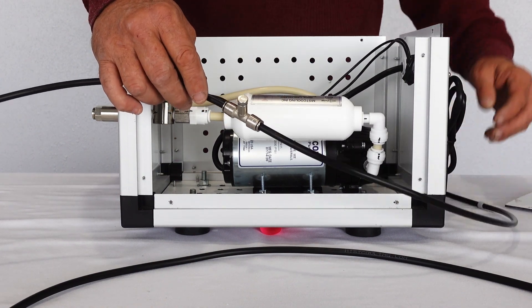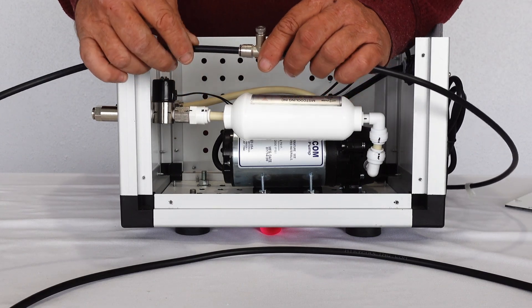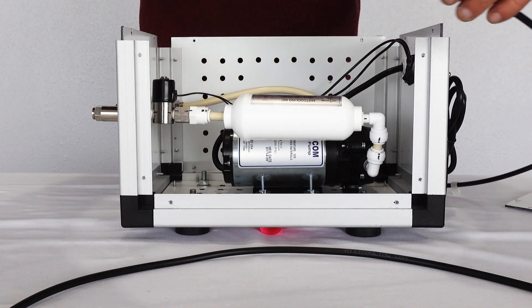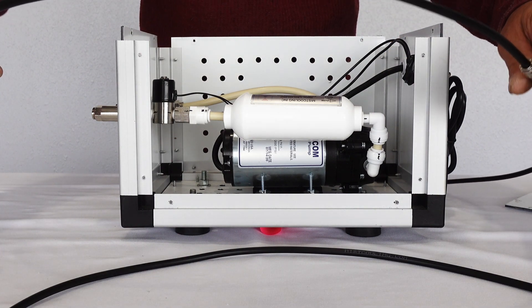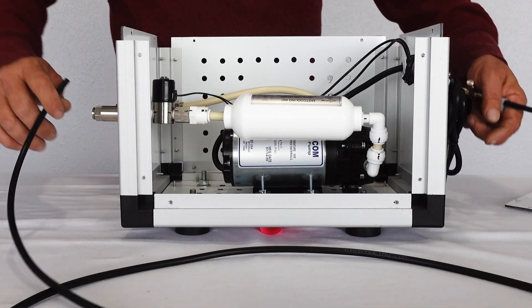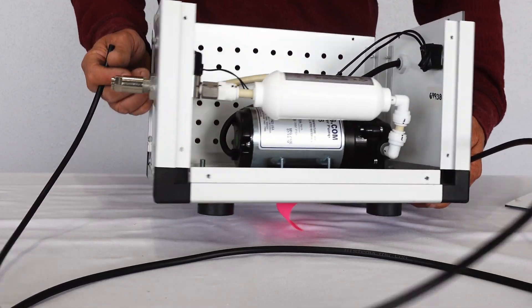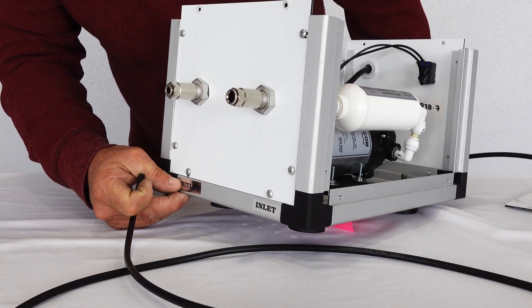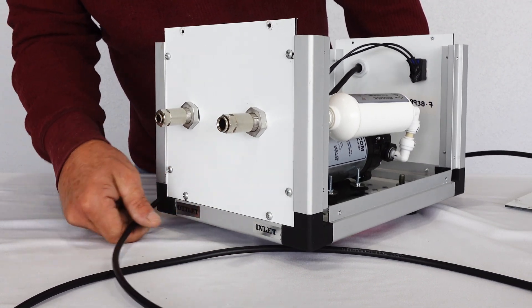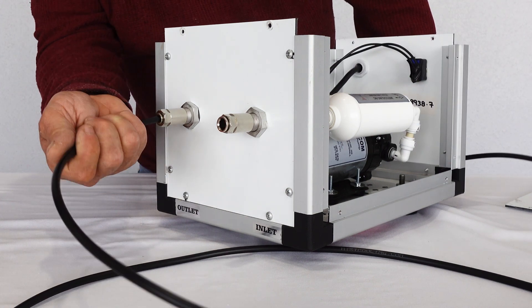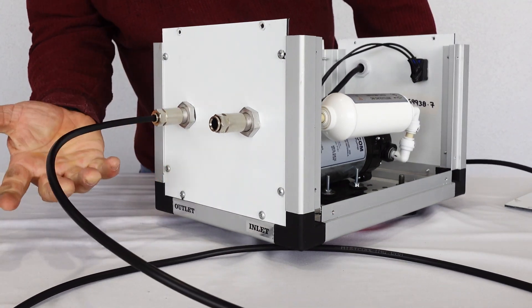Then from your very first misting tee you'll run a tube 20 foot or however long it takes to get back to the pump. And that will install on the outlet side. Just like the feedings, you just push it in until it stops.